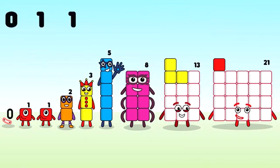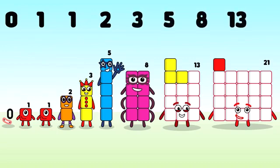So we have 0, 1, 1, 2, 3, 5, 8, 13, 21. This series of numbers is called Fibonacci Sequence.